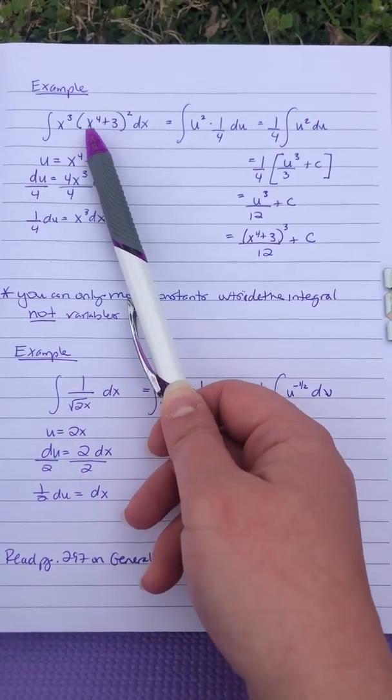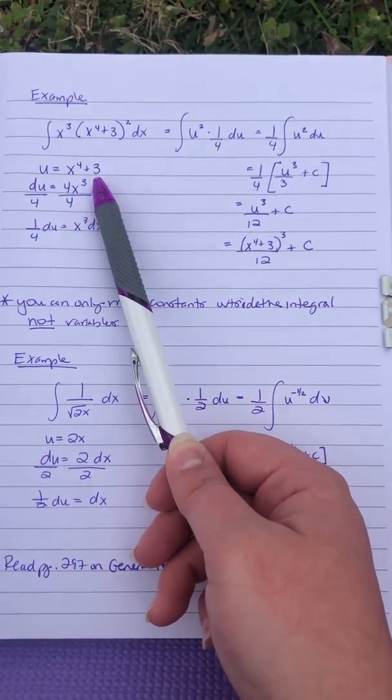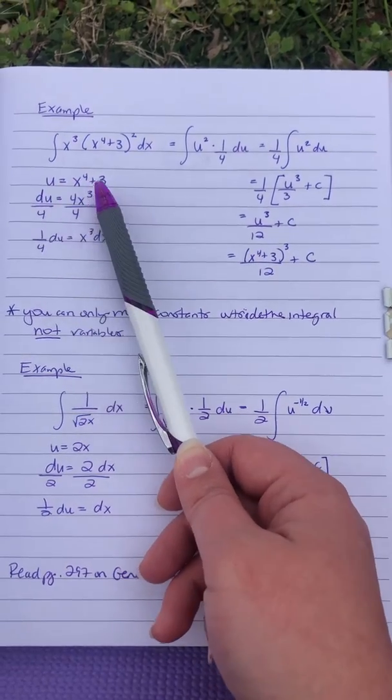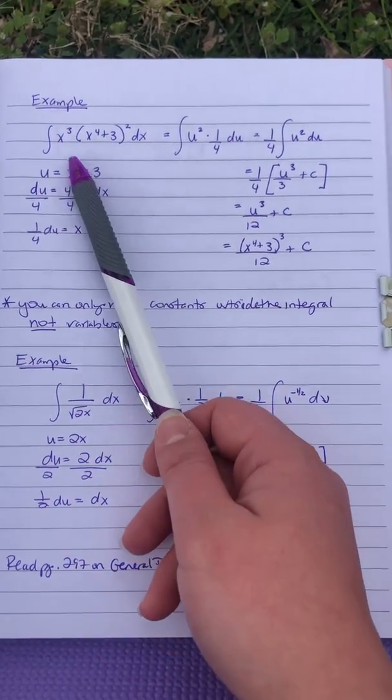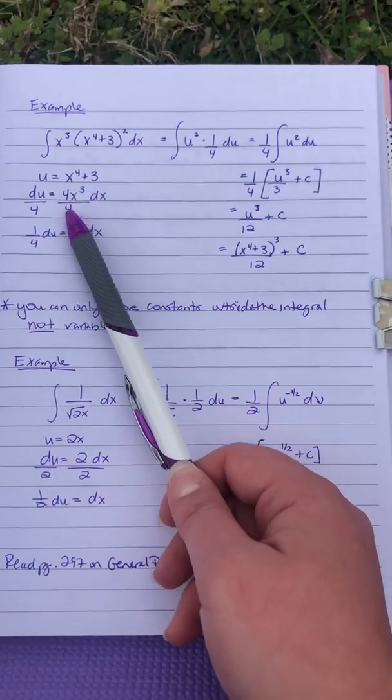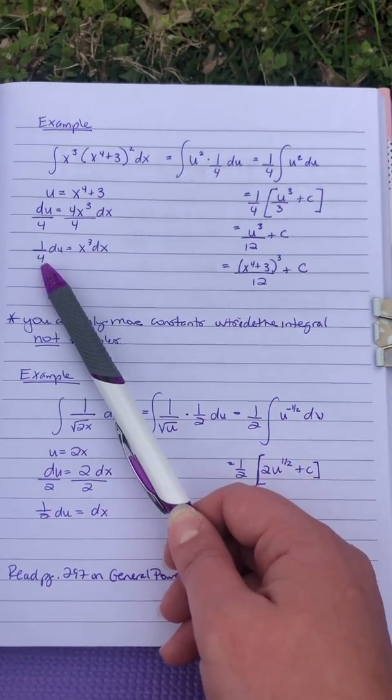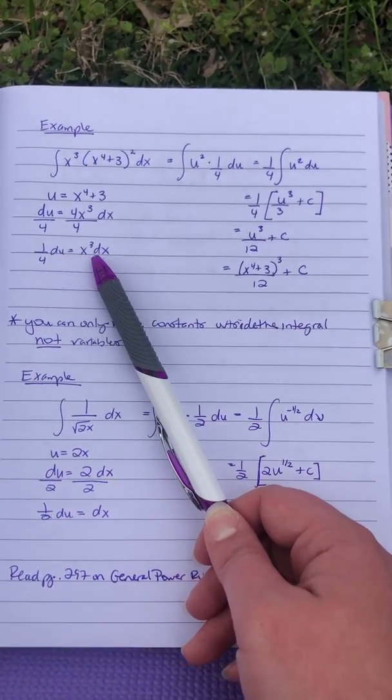So u is going to be the part being squared, so x to the fourth plus three. Take the derivative of it and you get 4x cubed dx. But it's just x cubed up here, so you're going to divide by four. So one fourth du is your x cubed dx.